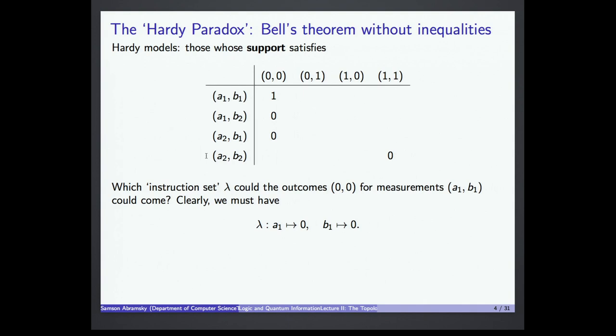Not only do we only need the support, we don't even need all 16 entries — we only need four. If we have these four, that's sufficient to show that there can't be a classical source. So this is really the minimum we need for the argument. To be clear about what these things are saying: in the same Alice-Bob arrangement, the probability of getting this joint outcome for these measurements is in the support — it has positive probability — whereas these others are not in the support, so they have probability zero. In other words, these are impossible, this is possible. We're speaking at the level of possibilities, and that's all we need.